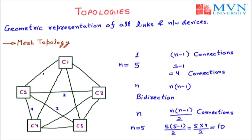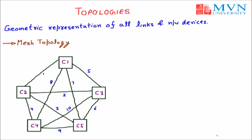You can find all ten connections: four are already mentioned; five is C1 to C3, six is C3 to C5, seven is C1 to C5, eight is C4 to C1, nine is C4 to C5, and ten is C4 to C3. So for five computers we have ten connections. The formula is: for n computers or n nodes, we have n × (n−1) / 2 connections.